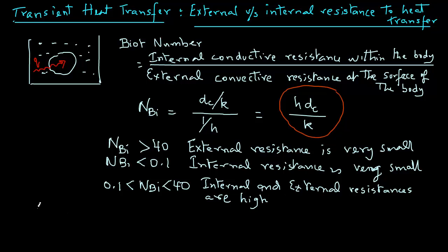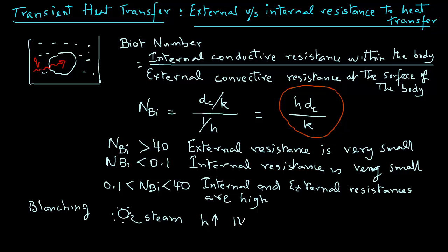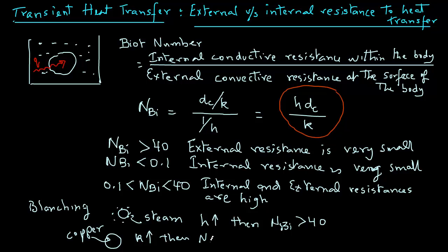For example, in the case of blanching, if steam is condensing on peas, the H value will be very high — as condensing steam has a very high convective heat transfer coefficient. So the Biot number will be greater than 40. Whereas if you have an object made of copper, the thermal conductivity is very high, meaning the internal resistance is very small, and the Biot number will be less than 0.1.